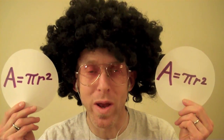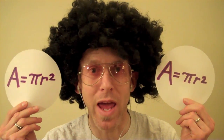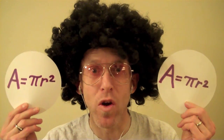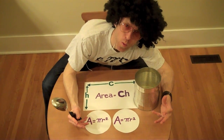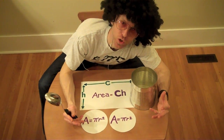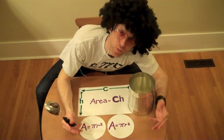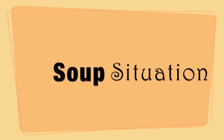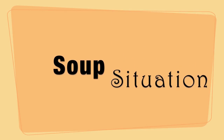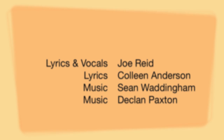You might not know it, you might not care. The area of two circles is 2πr². What I had here was a soup situation. How about 1πr²?